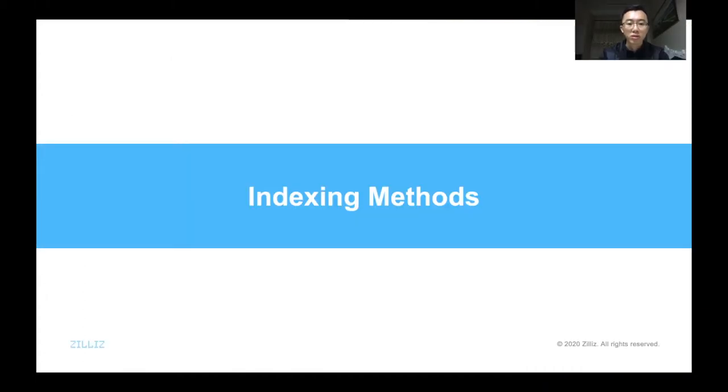Next, we'll introduce three types of vector indexing methods for approximate vector search.